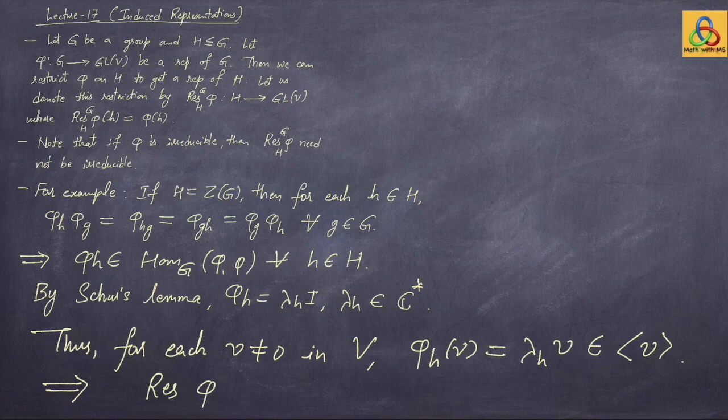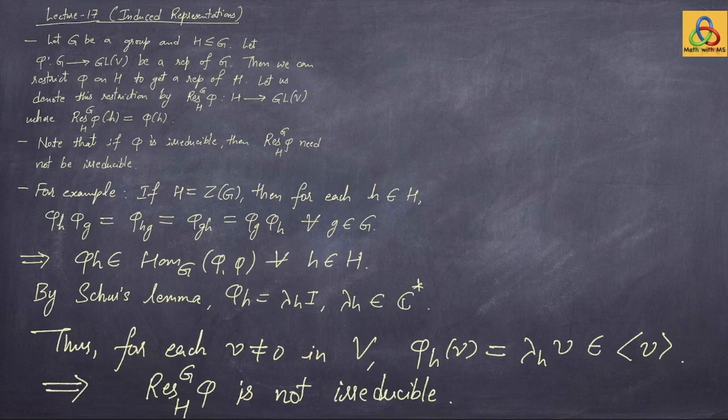For each v not equal to zero in the representation space V, phi(h) of v equals lambda(h) times v, which belongs to the vector subspace spanned by v. This implies that the restriction of phi from G to the center — or more generally to any central subgroup — is not irreducible. So restriction of an irreducible representation need not be irreducible; most often it is not.